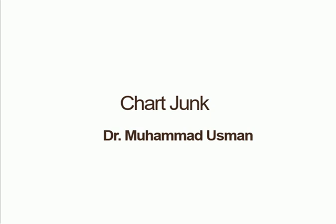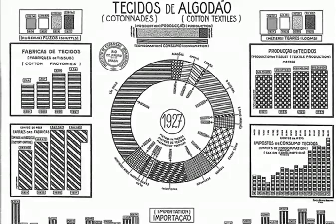First, we will talk about the first example of chart junk. It consists of black and white lines — any kind of lines which have no meaningful width or data representation. This kind of visualization is called chart junk. We used this technique in the past to display and generate patterns when visualizations were black and white, because coloring techniques were not yet available.